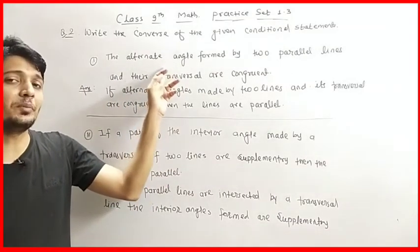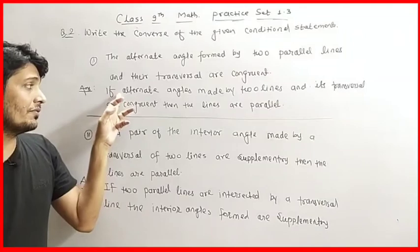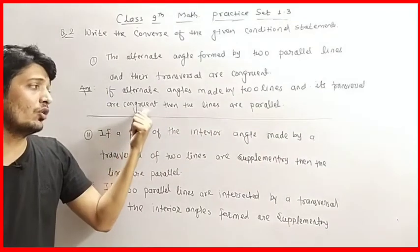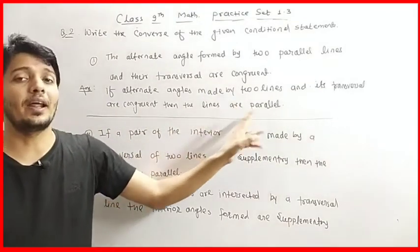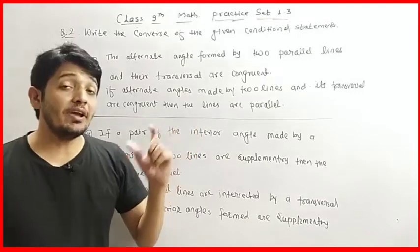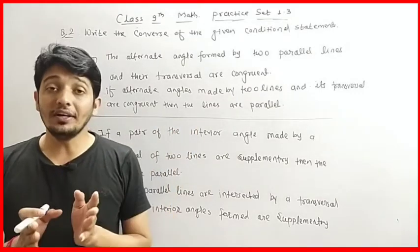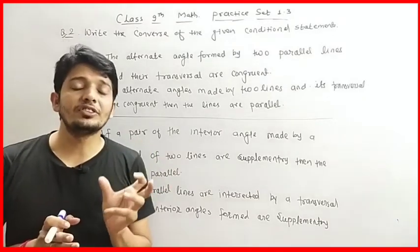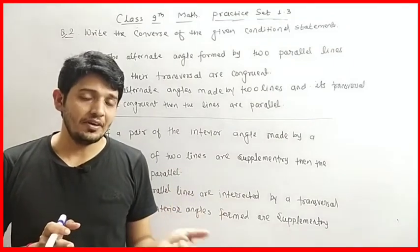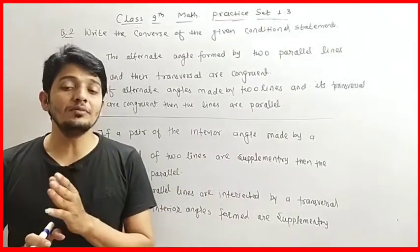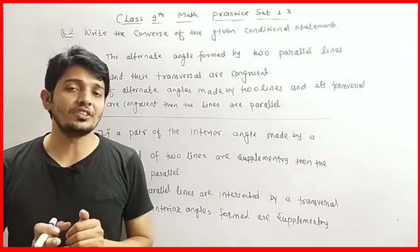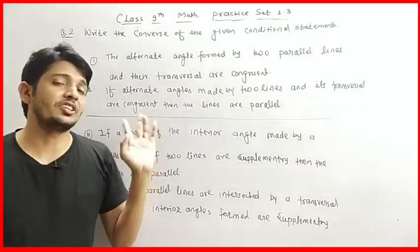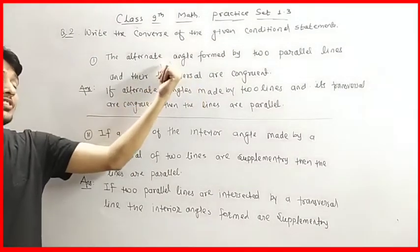We have to write the converse of this statement. The converse will be: if the alternate angles made by two lines and their transversal are congruent, then the lines are parallel. What we have done is converted the antecedent into the consequence and the consequence into the antecedent — we have interchanged them. This is the converse of the given statement.